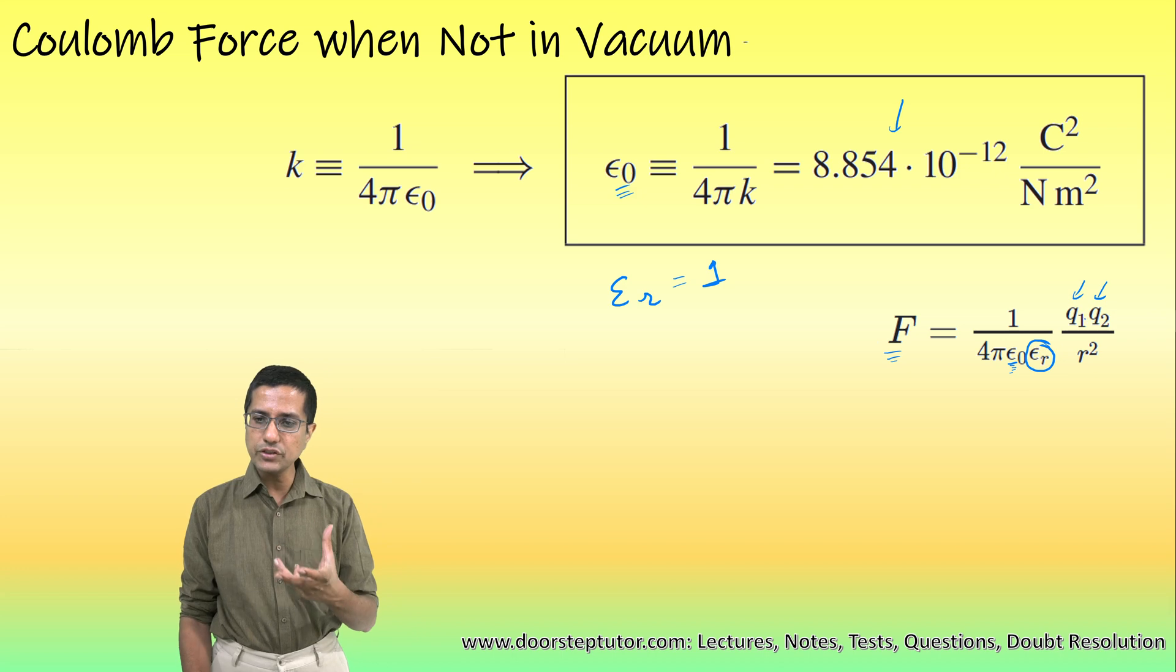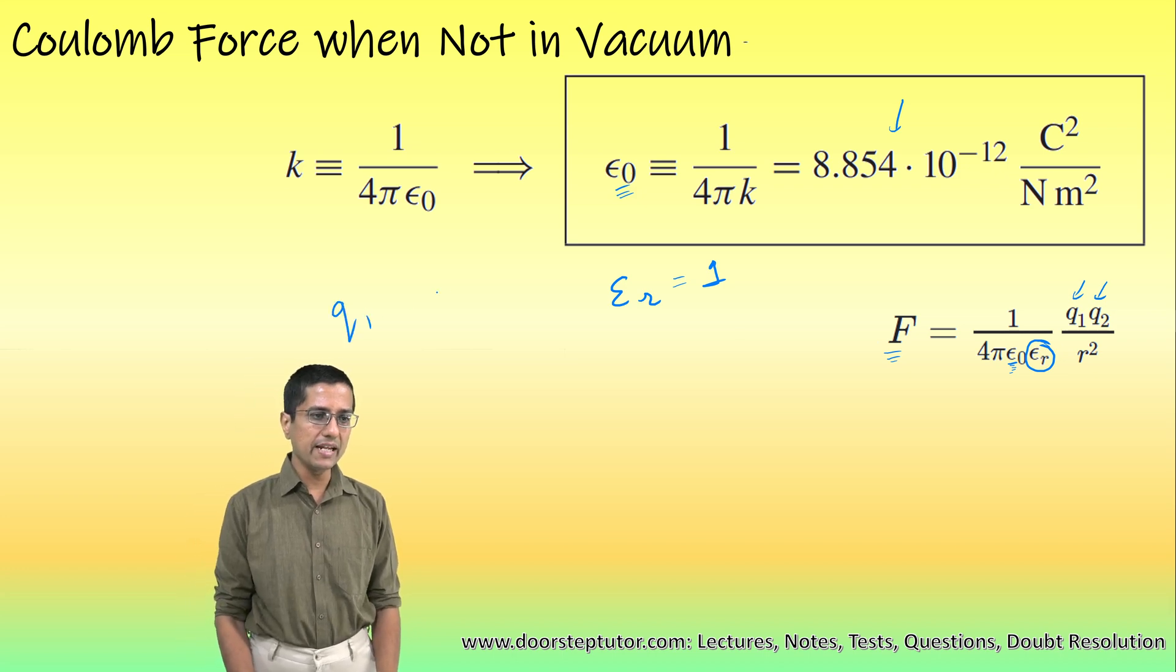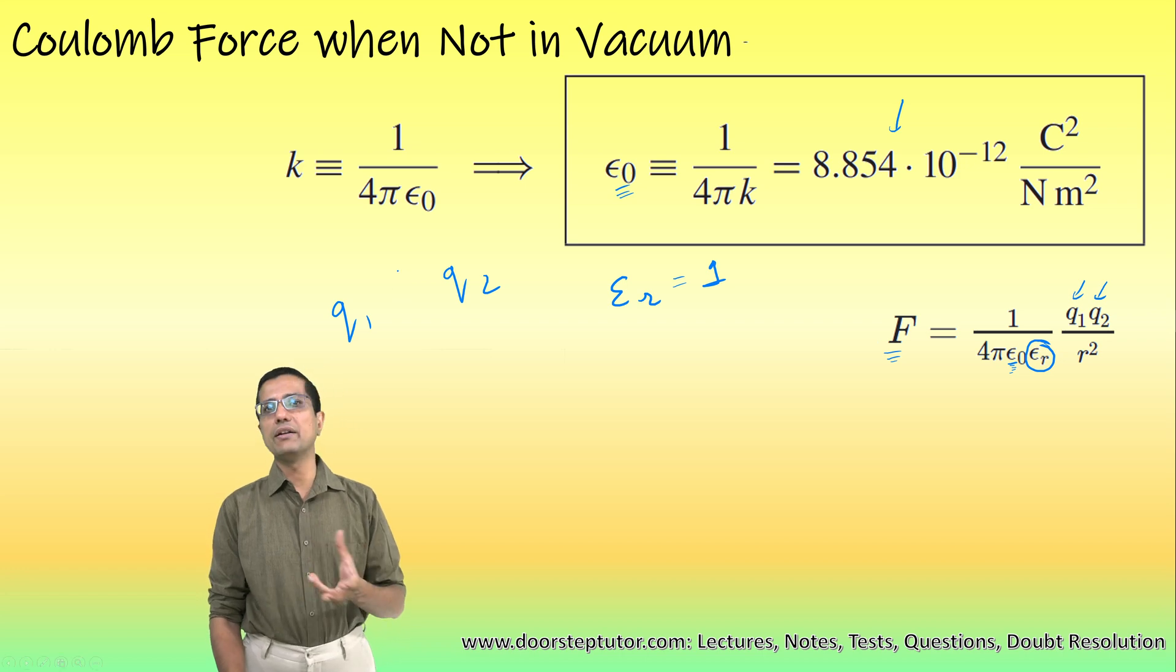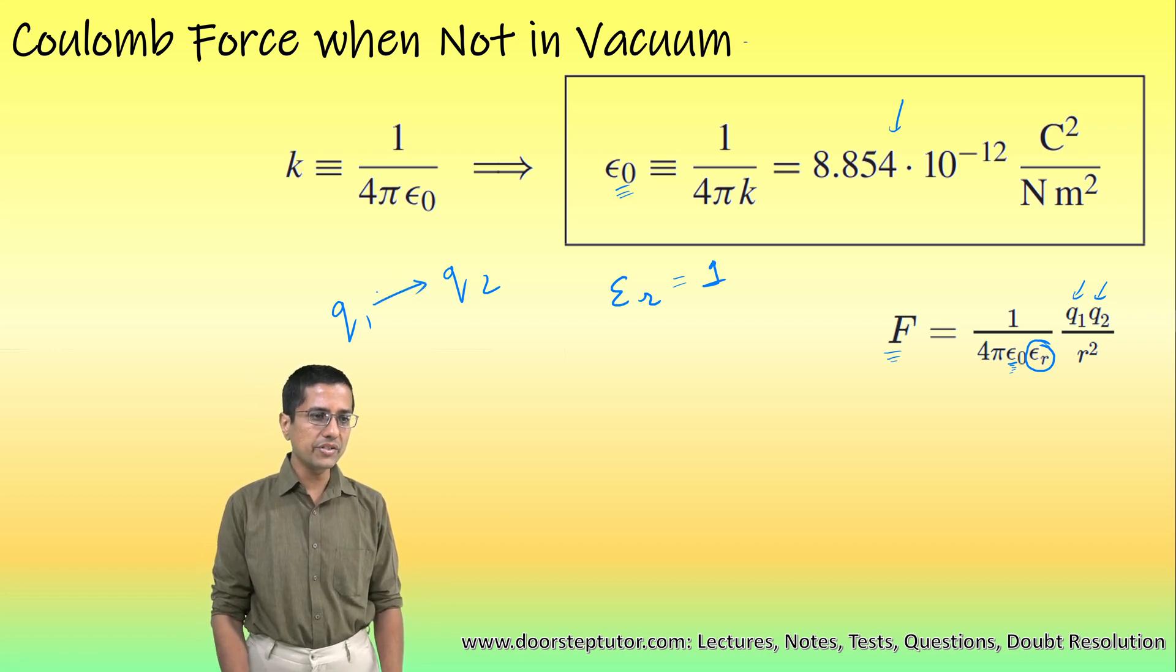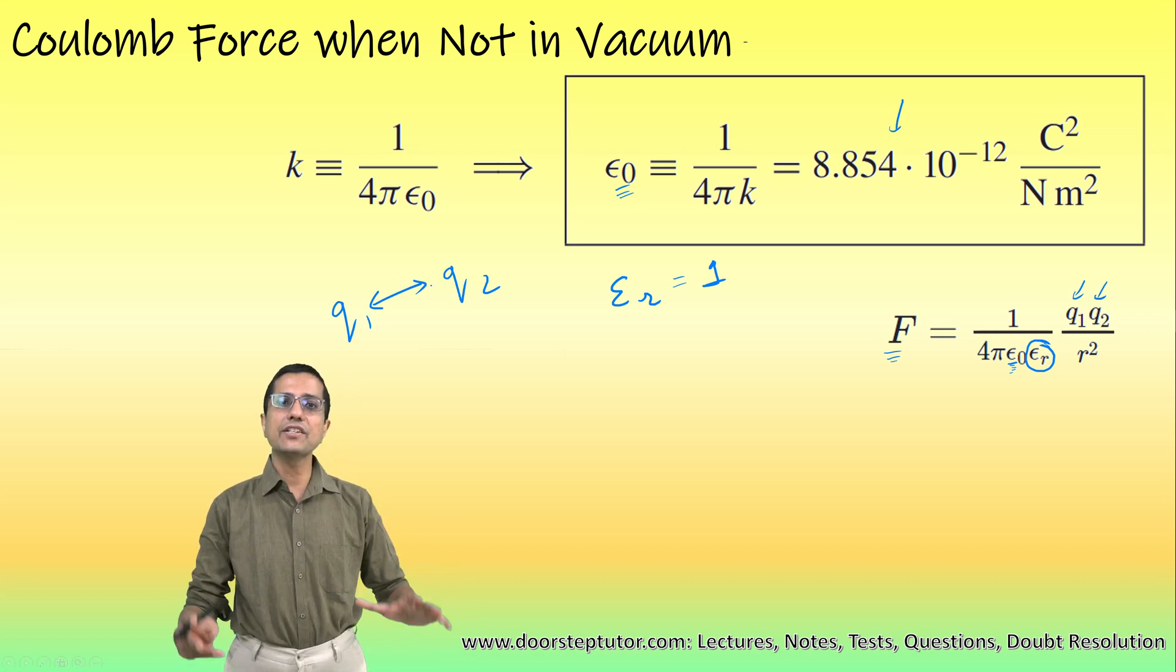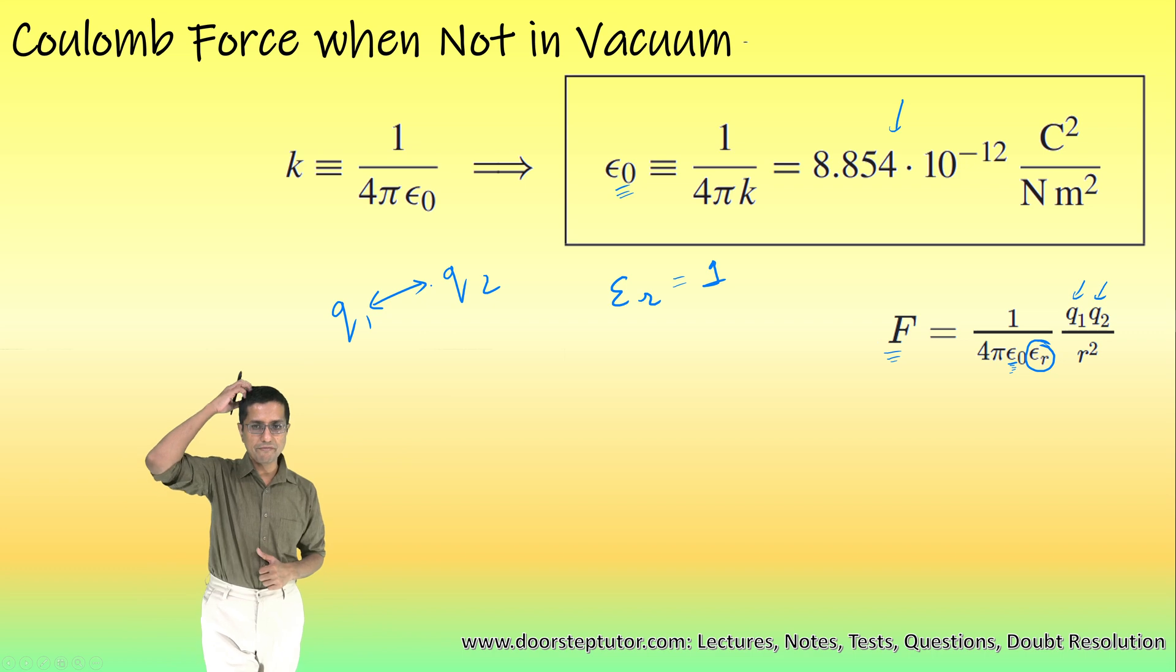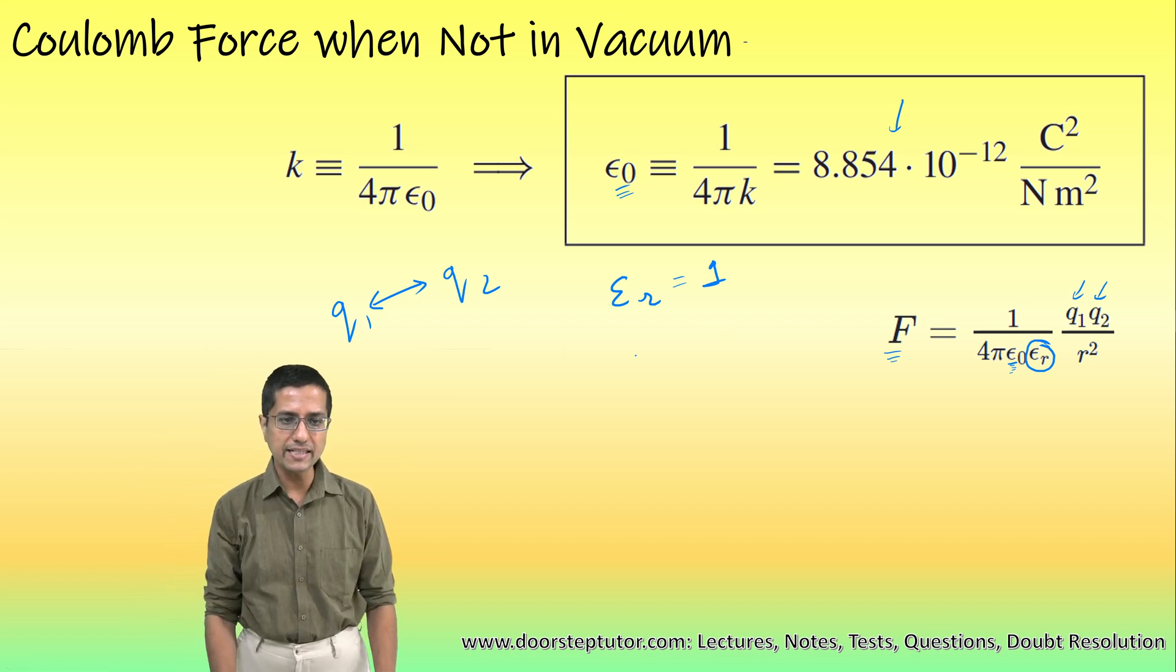When we are placing these two same particles in any other medium, let's say water or air, any other medium, then the amount of force which is allowed to pass between these two particles is reduced by a factor which is known as epsilon r.